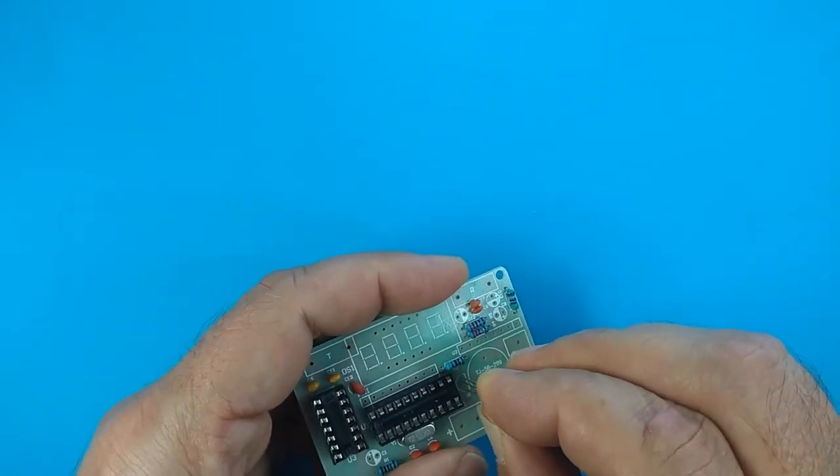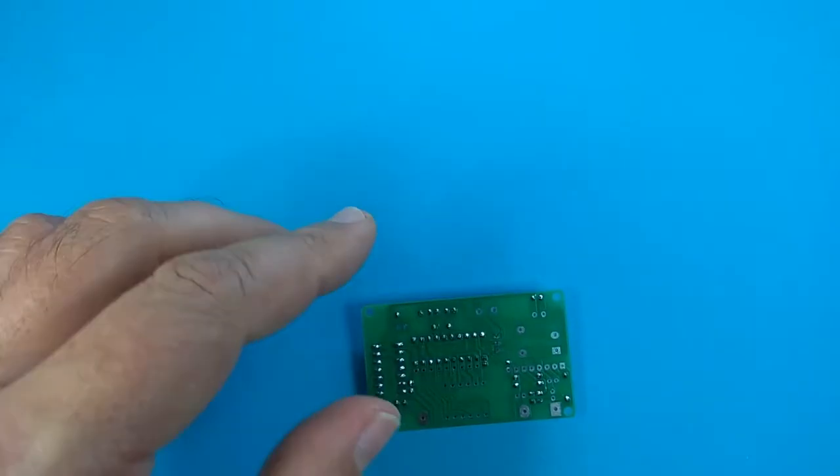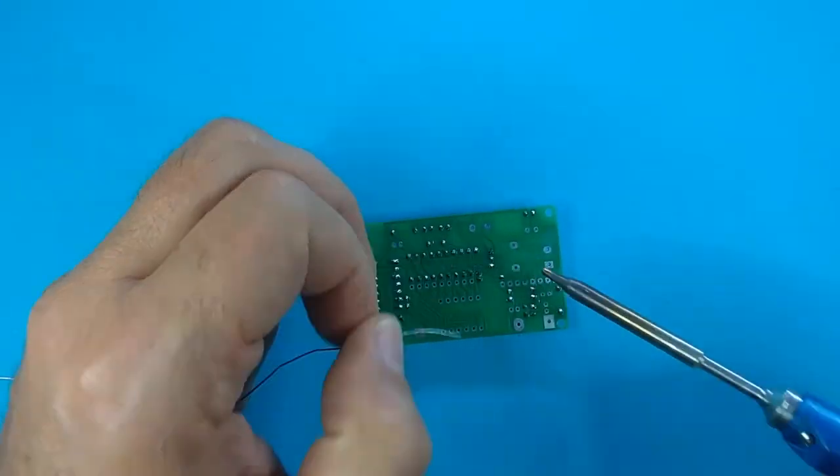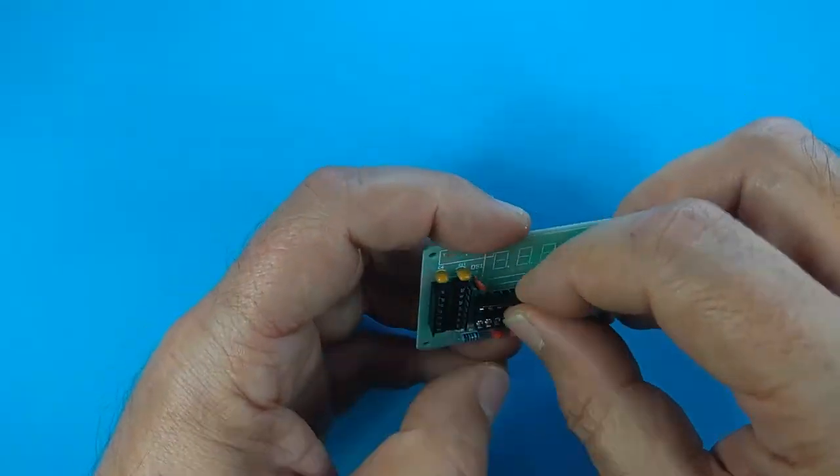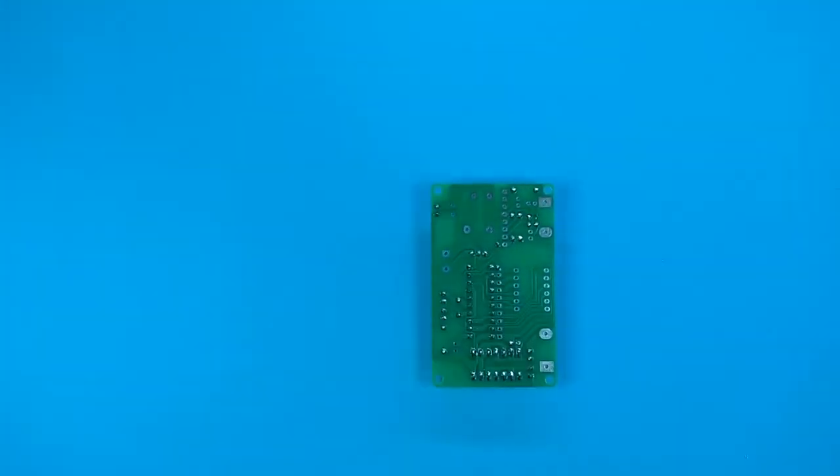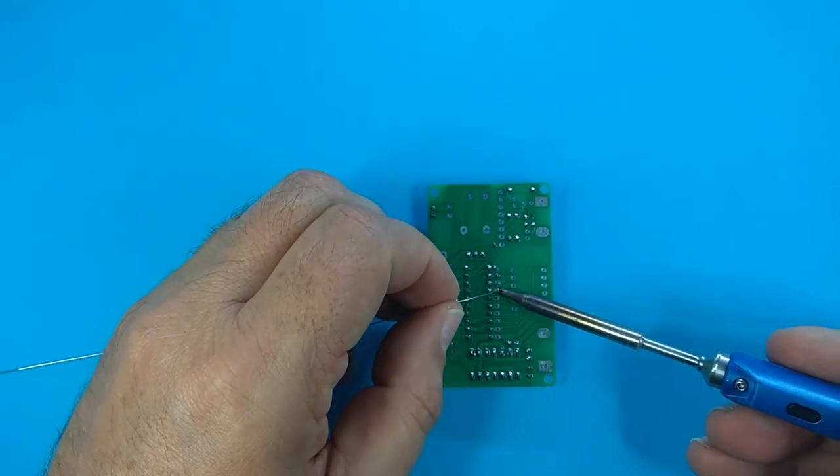I'm afraid that Zoli solders the transistor too early. The resistor network is less higher. He had to make some trick to fix it in its place. Yes. But I cut it out.